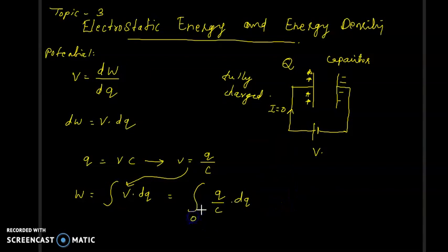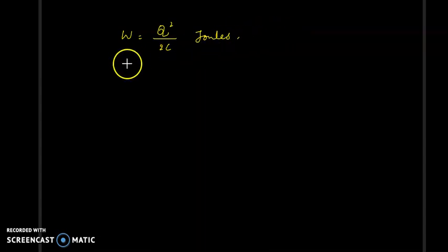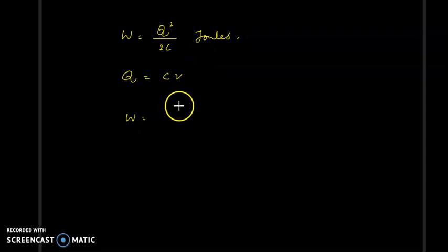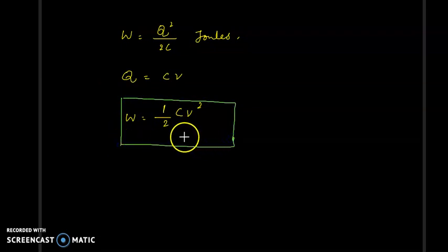The capacitor is fully charged from zero to Q. So this is equal to 1 by C, integrated Q squared by C, with the limit from zero to Q. The work done is Q squared by 2C. Since Q equals CV, W becomes half CV squared — the energy stored in the capacitor.